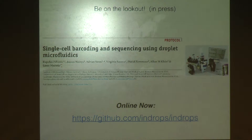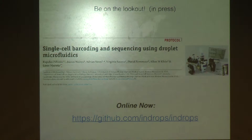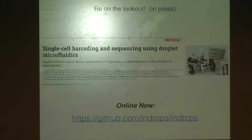There's a recent paper — I think it's in press now, so be on the lookout. This is an update to the inDrops library prep procedure. This Nature Protocols paper has much more detail than the original paper for how to set up your own device — how to make the hydrogels and do all those things. There's also a GitHub for the bioinformatics pipeline for low-level processing of the raw sequencing data, which has also been updated recently.